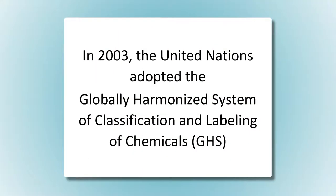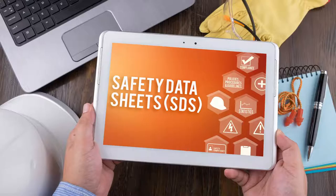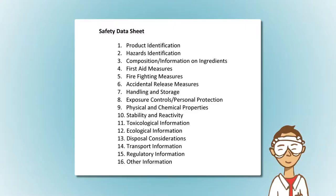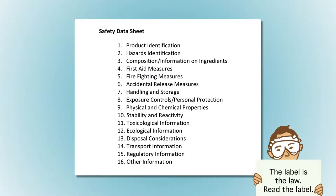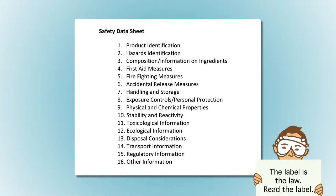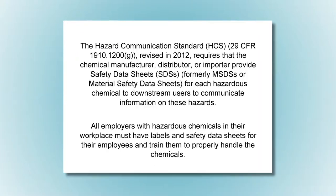The GHS includes criteria for classifying health, physical, and environmental hazards. It specifies what information should be included on labels and safety data sheets, or SDS. A SDS explains the hazards, precautions, and response actions for a product in medical or first aid treatment.